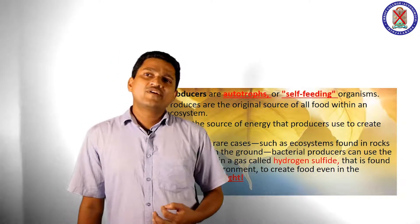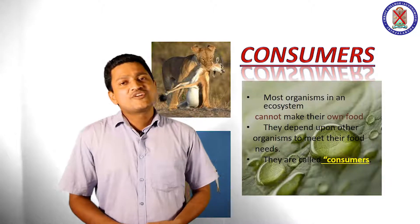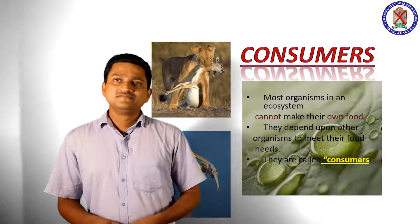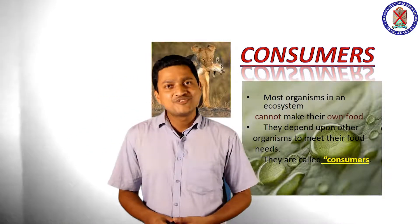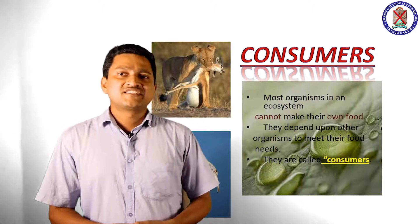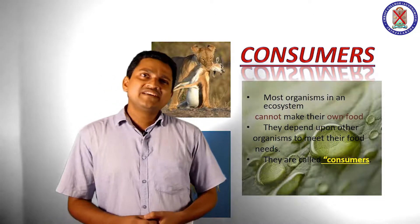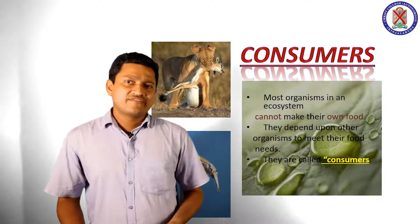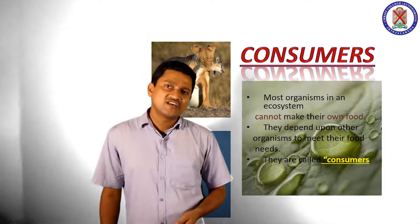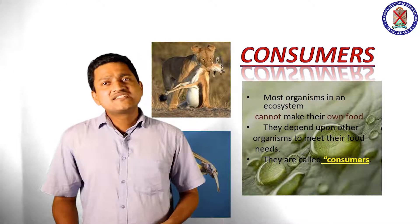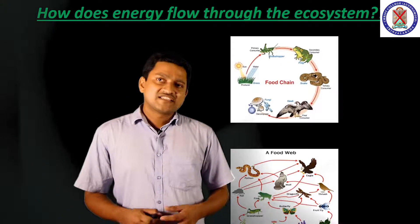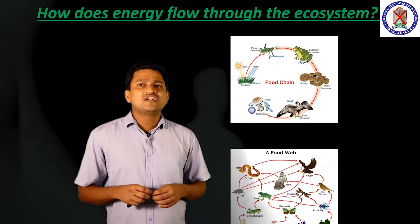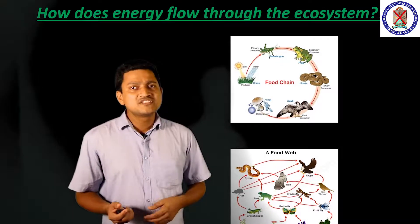The next group of organisms is the consumers. Most organisms in an ecosystem cannot make their own food; they depend upon other organisms to meet their food needs. They are called consumers — an organism that consumes another organism for energy. Consumers are classified into mainly three groups: herbivores, carnivores and omnivores.